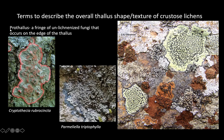The first thing I want to introduce is the pro-thallus: a fringe of unlichenized fungi that occurs on the edge of the thallus. You might have observed colonies of crustose lichens growing intermixed with a clearly defined border separating them — that is the pro-thallus. It's a layer composed only of the fungus, not the algae. Sometimes it can be a black line, sometimes a bluish tinge as seen here under Parmeliella tryptophylla, and sometimes an amazing brilliant hot pink, as in Cryptothecia rubrocincta, which grows in the southeastern United States and tropics.